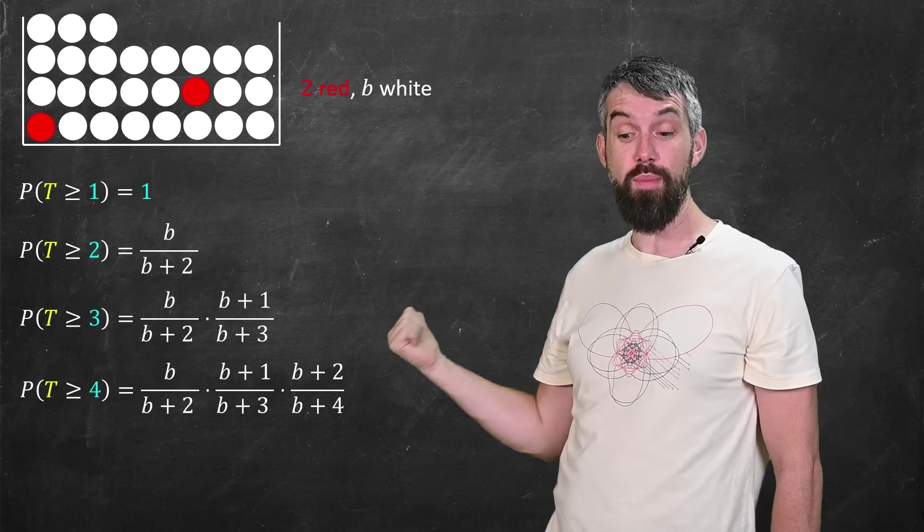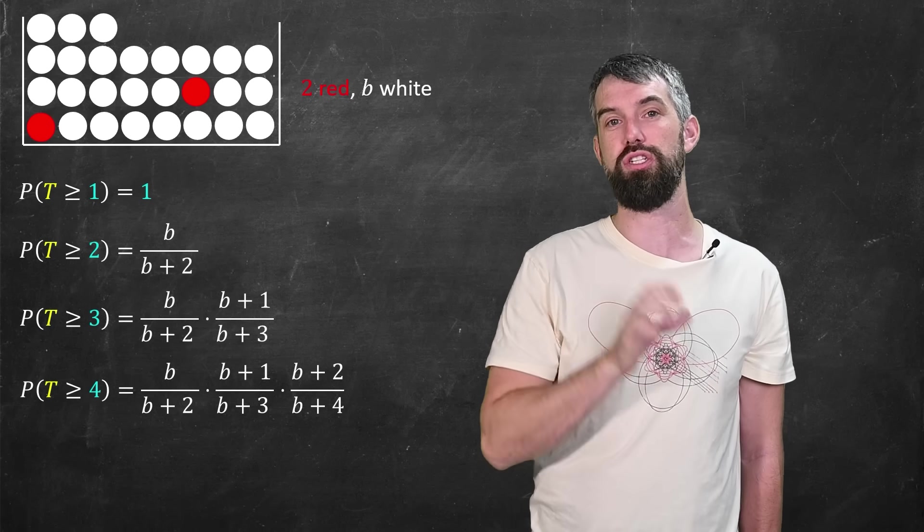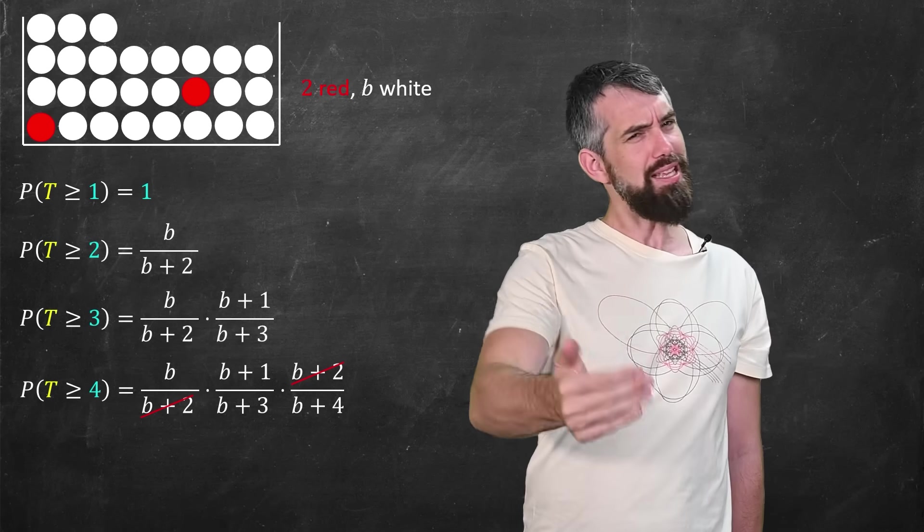But it turns out that if I go one more further to the probability that T takes at least four steps, I actually do, by the same argument, get a nice little cancellation starting to appear. And if you extend this argument out, here's the big long messy formula.